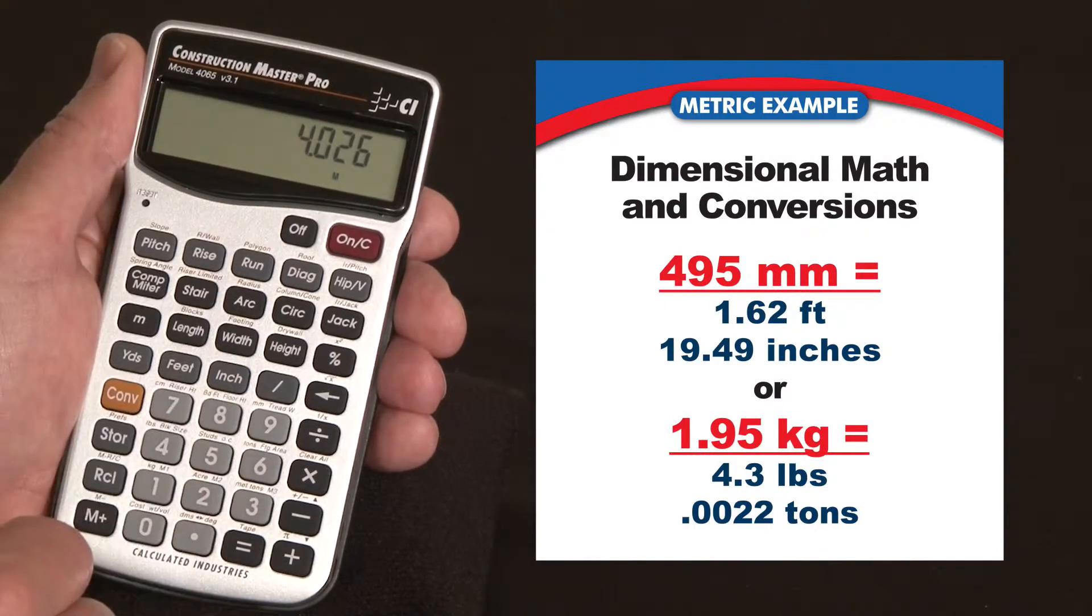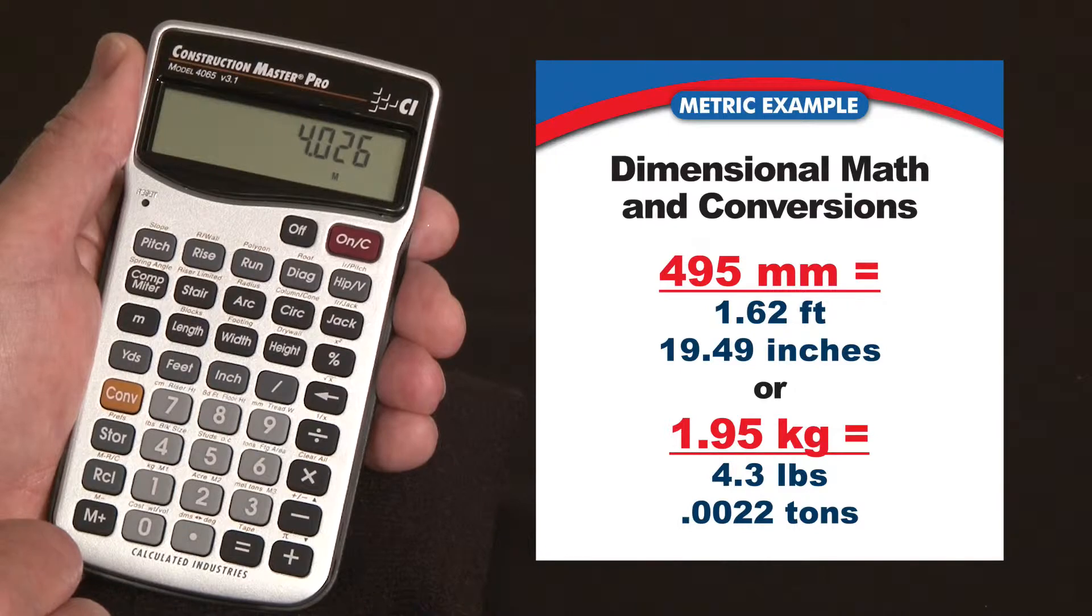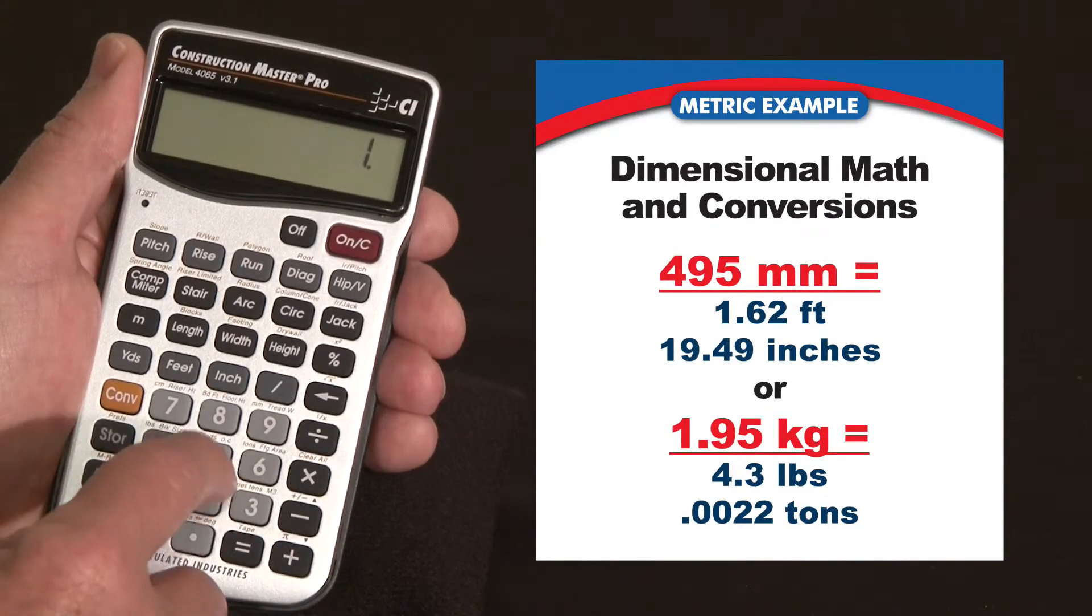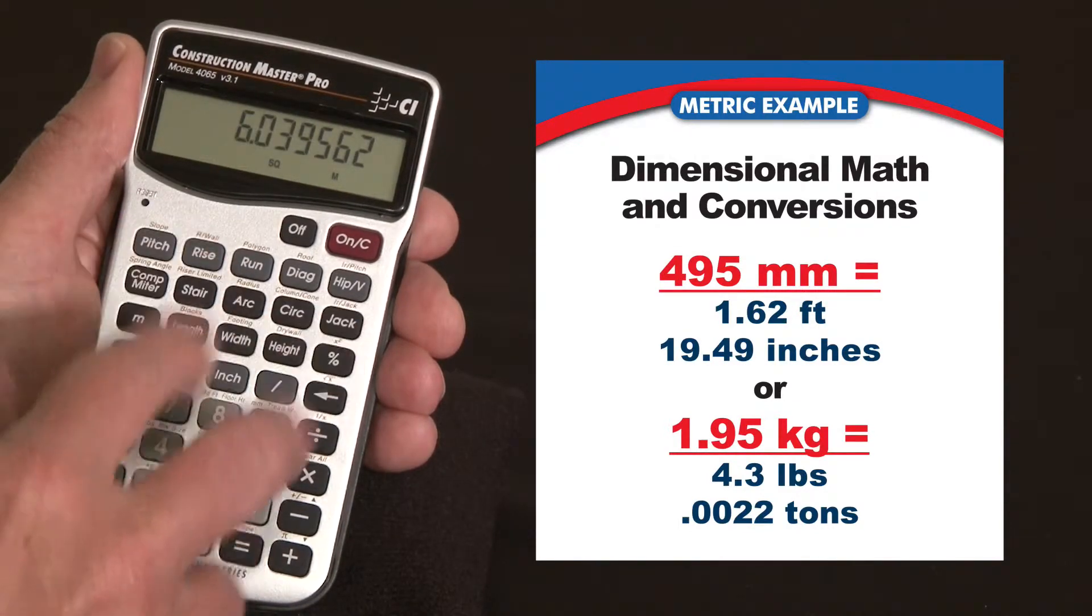Let's go back to meters. Say that's one side of a pad or a little walkway, you could say multiply it by 1.5 meters. There's your square meter area.